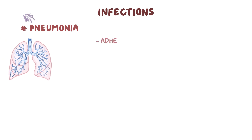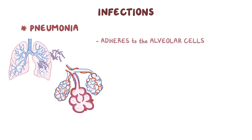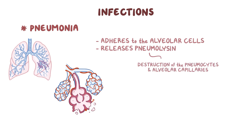Strep pneumoniae sticks to the alveolar cells, the pneumocytes, and releases pneumolysin, which leads to the destruction of the pneumocytes and alveolar capillaries. Pneumonia causes fevers and chills, chest pain, and cough.